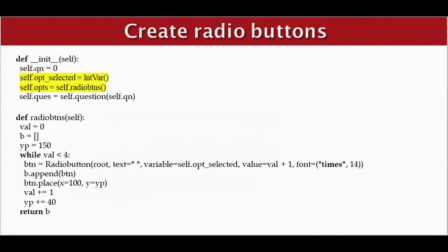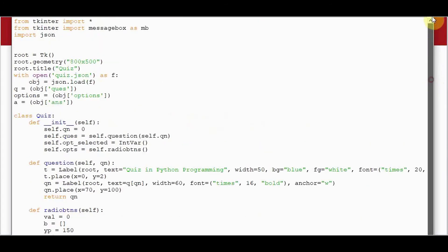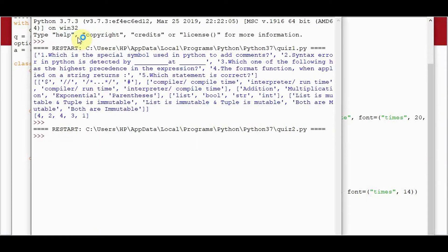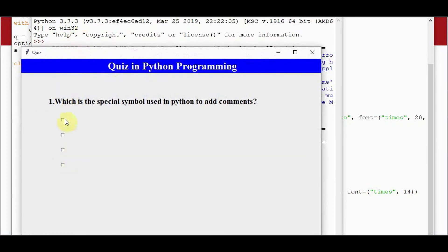Next, we are going to create the radio buttons. We have four options, so we are creating four radio buttons. I have a variable called self.opt_selector initialized to an IntVar, meaning it can hold only an integer value. This function creates four radio buttons for all four options, stored in a list called b. Initially the text is empty and self.opt_selector is used as the variable.